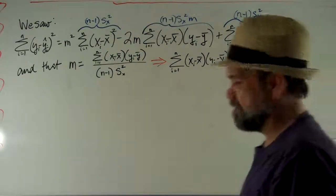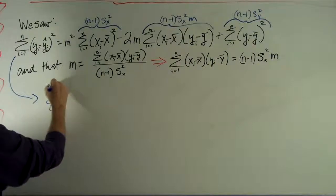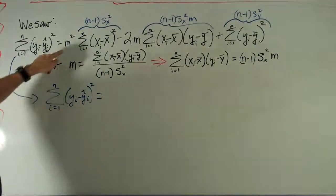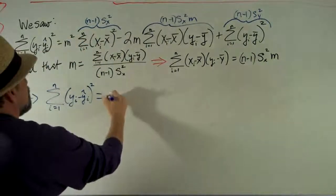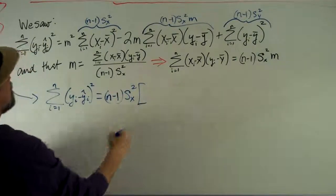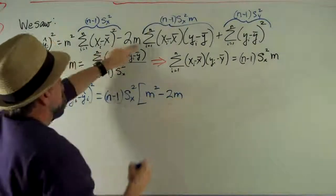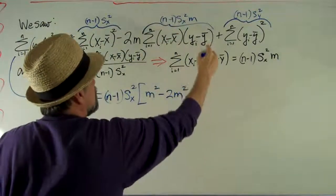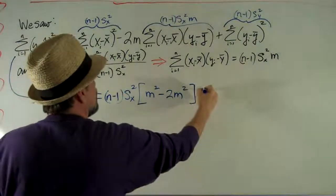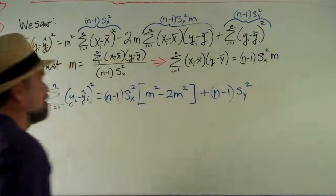Well, then, let's see. That means the sum of my squares as i goes from 1 to n of yi minus y hat i. That is, I can take n minus 1 times the variance of x, m squared minus 2 times m times another m squared, plus n minus 1 times the variance of y. Okay, you with me?